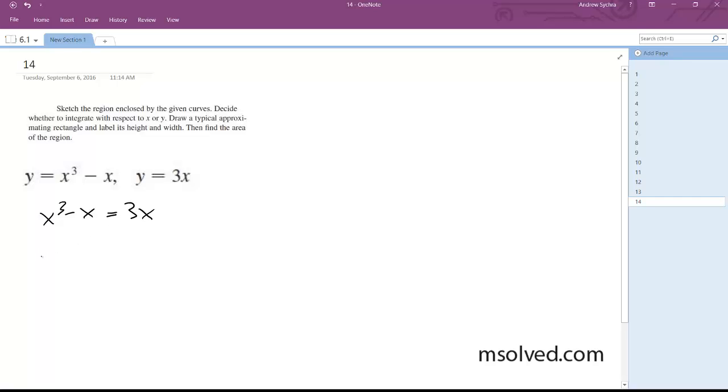so x cubed minus 3x, so we get minus 4x equal to 0. So factor out an x,